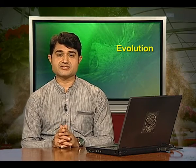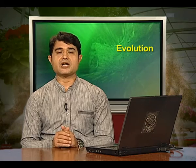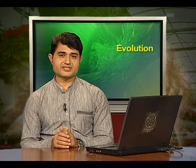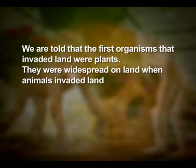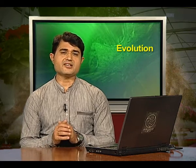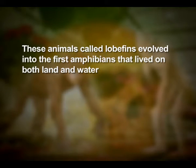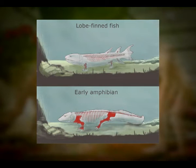By the time 500 million years ago, invertebrates were formed and active. Jawless fish probably evolved around 350 million years ago. Seaweeds and a few plants existed around 320 million years ago. The first organisms that invaded land were plants, and they were widespread when animals invaded land. Fish with stout and strong fins could move on land and go back to water — this was about 350 million years ago. In 1938, a fish caught in South Africa turned out to be a coelacanth, which was thought to be extinct.